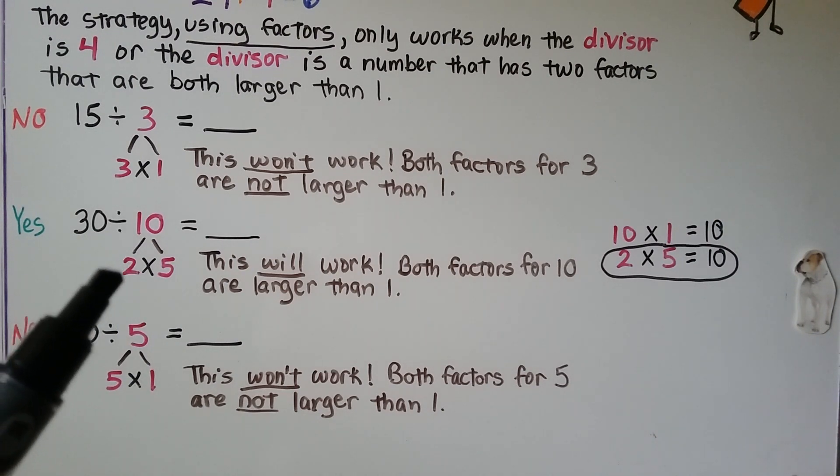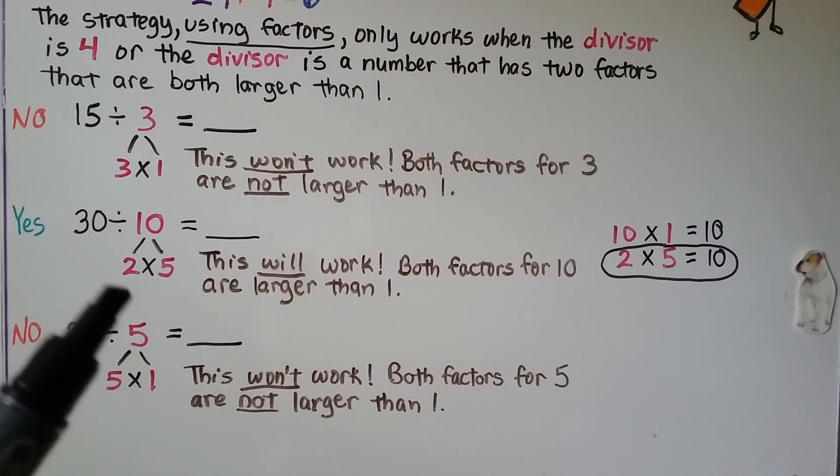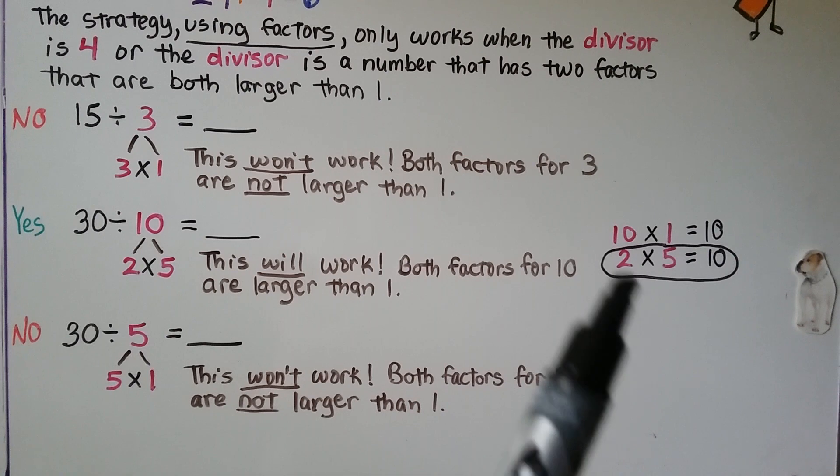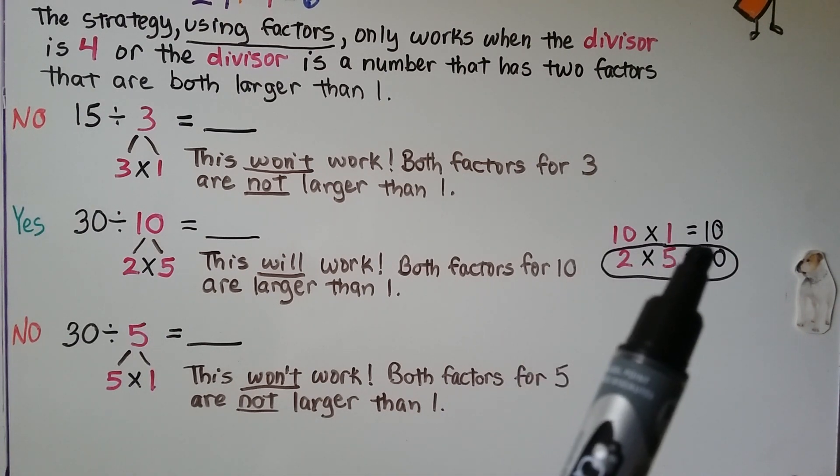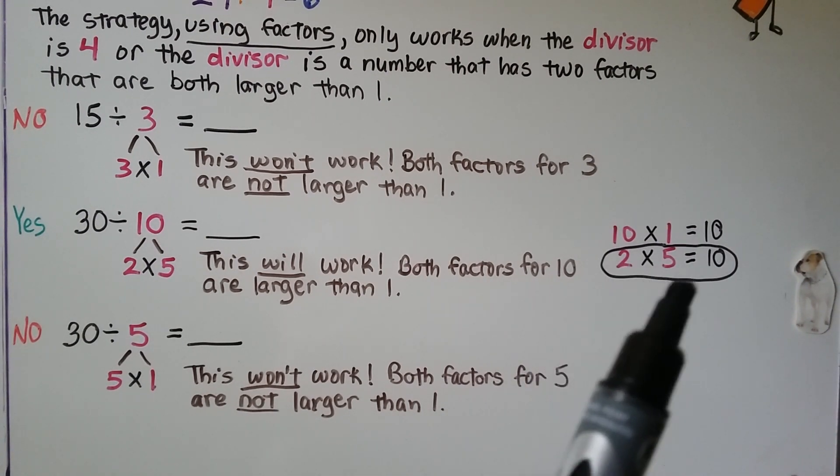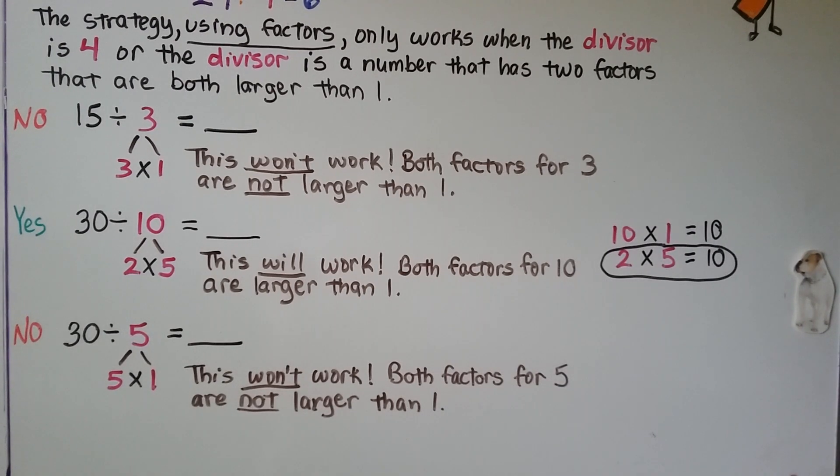For 30 divided by 10, the 10 can be split up into 2 and 5: 2 times 5. This will work because both factors for 10 are larger than 1. Yes, 10 and 1 are factors of 10, but so are 2 and 5, so we choose this one.